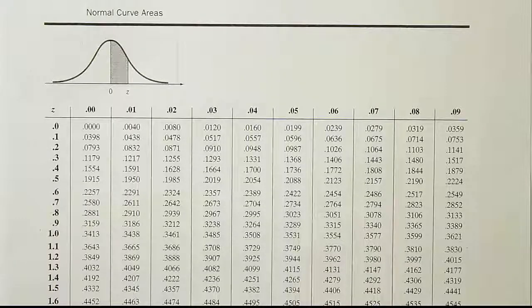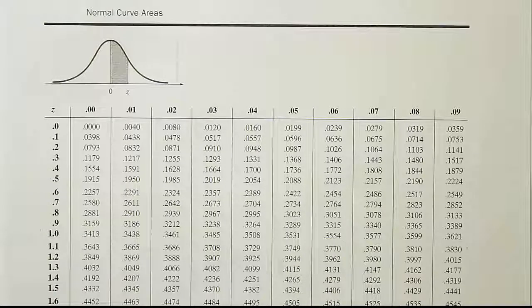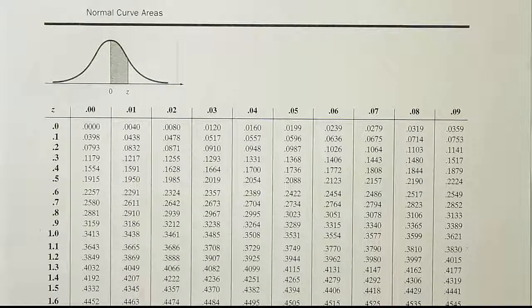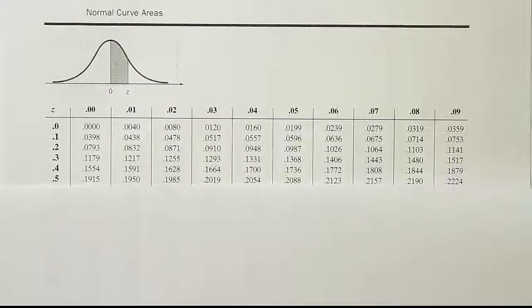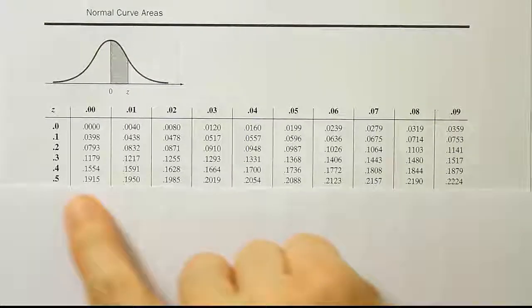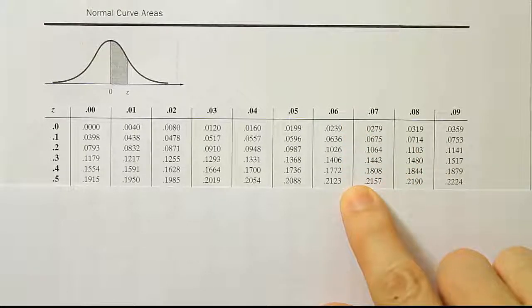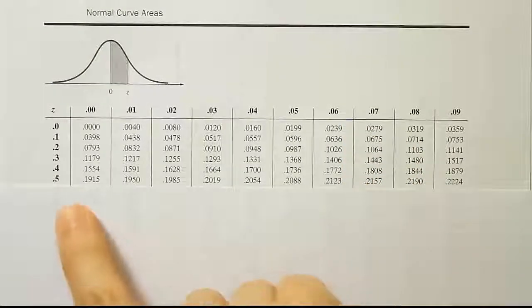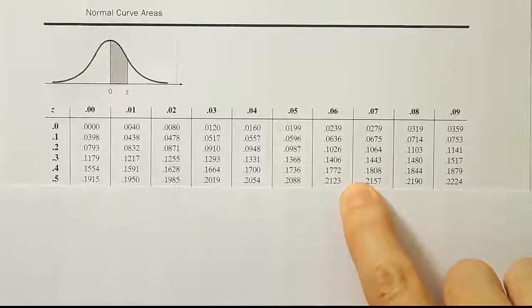Okay, so we have two Z-scores to find now. We have 0.56 and 3.03. So let's get the 0.56 first. So in the leftmost column, I find the 0.5 there. And if I come over to where it says 6, I get the answer 0.2123. So 0.56, 0.2123.